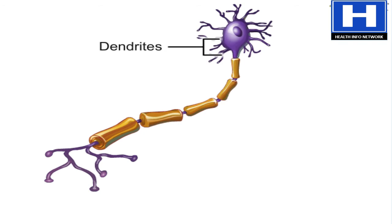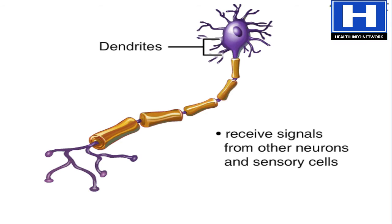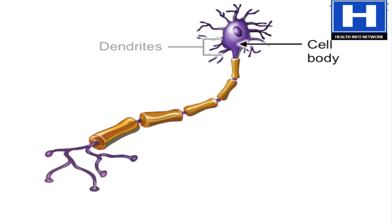The dendrites are tree-like structures. Their job is to receive signals from other neurons and from special sensory cells that tell us about our surroundings. The cell body is the headquarters of the neuron. It contains the cell's DNA.